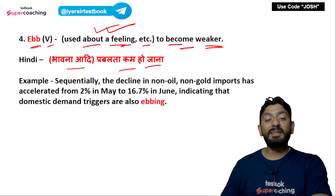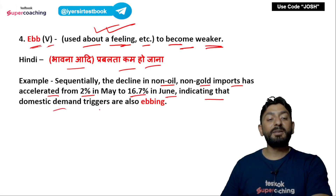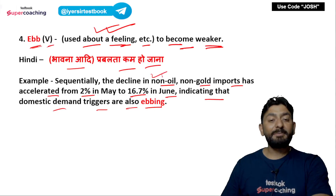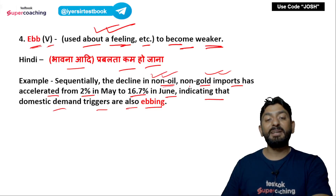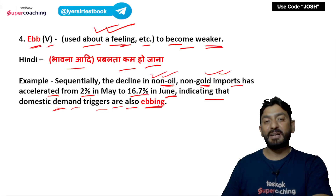Sentence: Sequentially, the decline in non-oil, non-gold imports has accelerated from 2% in May to 16.7% in June, indicating that domestic demand triggers also are ebbing. मतलब non-oil और non-gold imports में भी कमी हुई है — 2% से 16.7% तक June में — और इससे दिखता है कि India के अंदर domestic demand भी धीरे-धीरे कम हो रही है, पीछे की तरफ जा रही है — that is ebbing.